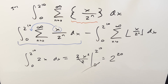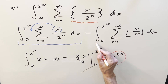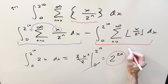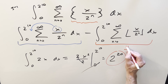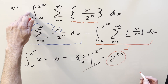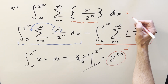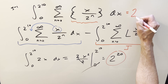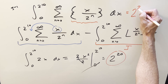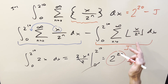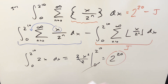We'll capture this value and label the second integral J, since the original integral is I. When we come back, our solution is going to be 2^20 minus this J integral.